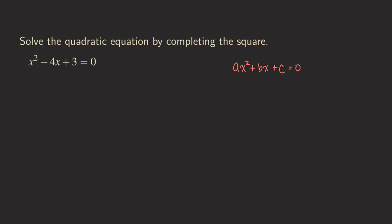So for our quadratic equation, a is equal to one, and b is equal to negative four. Note that b is not positive four — it's negative four. We need to make sure to include the sign. We put a plus in the standard form because we allow b to be a negative number; adding a negative number is the same as subtraction. And c is equal to three.